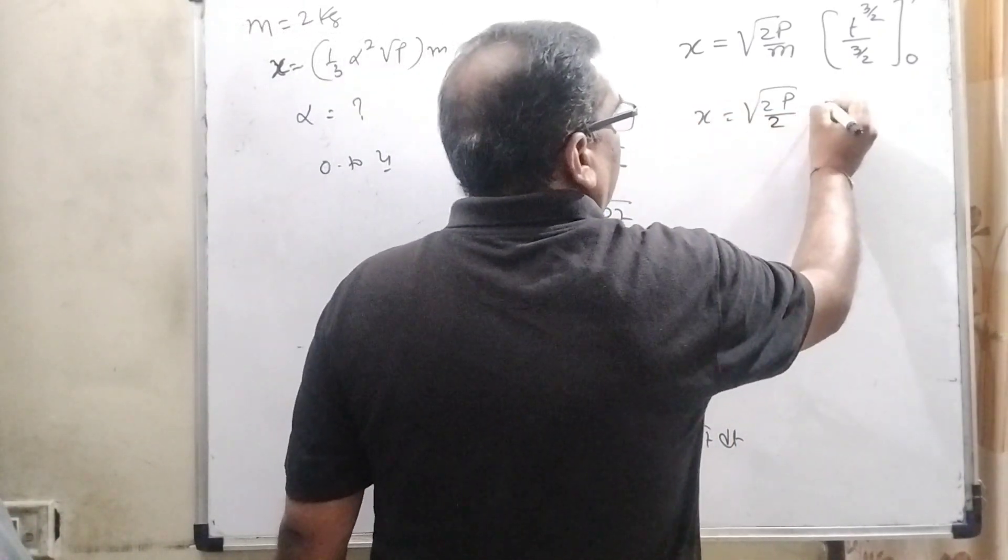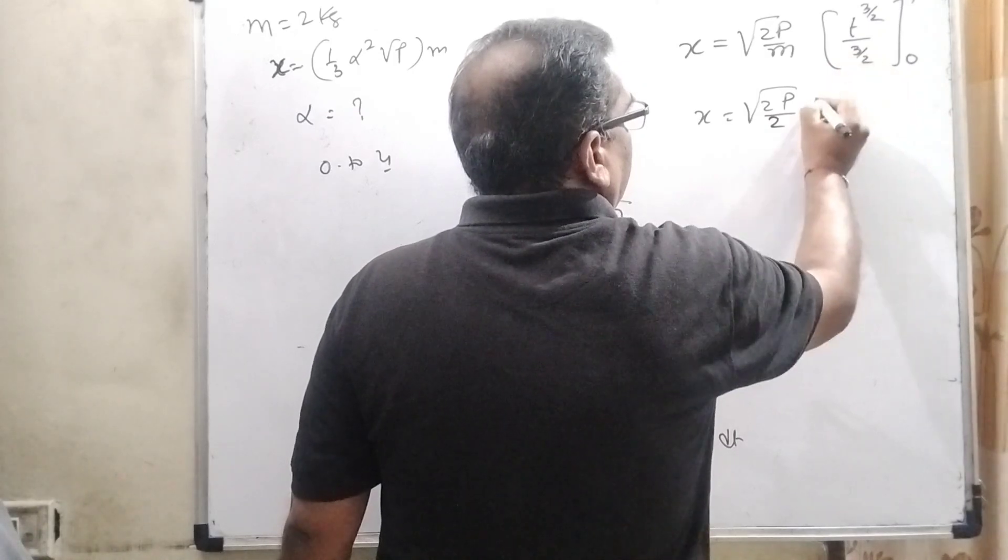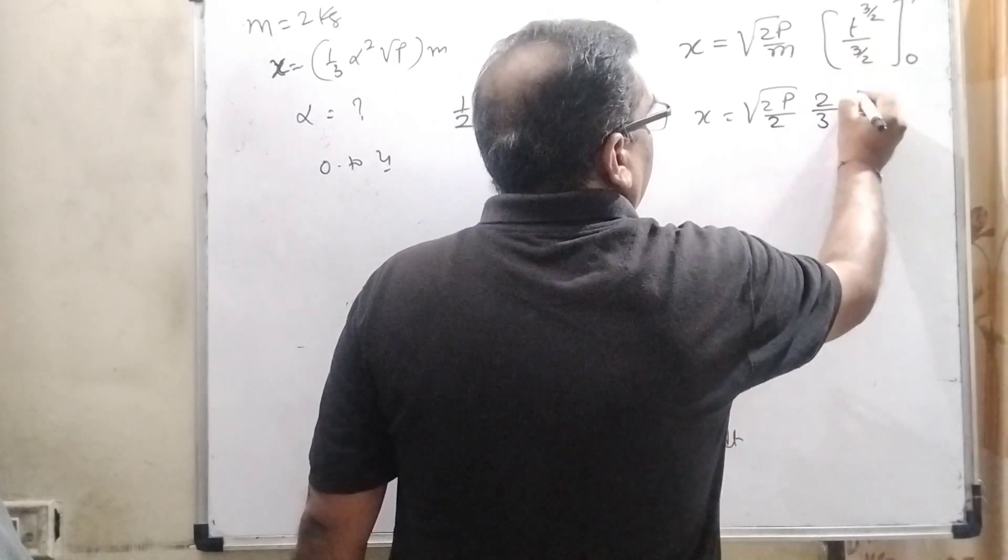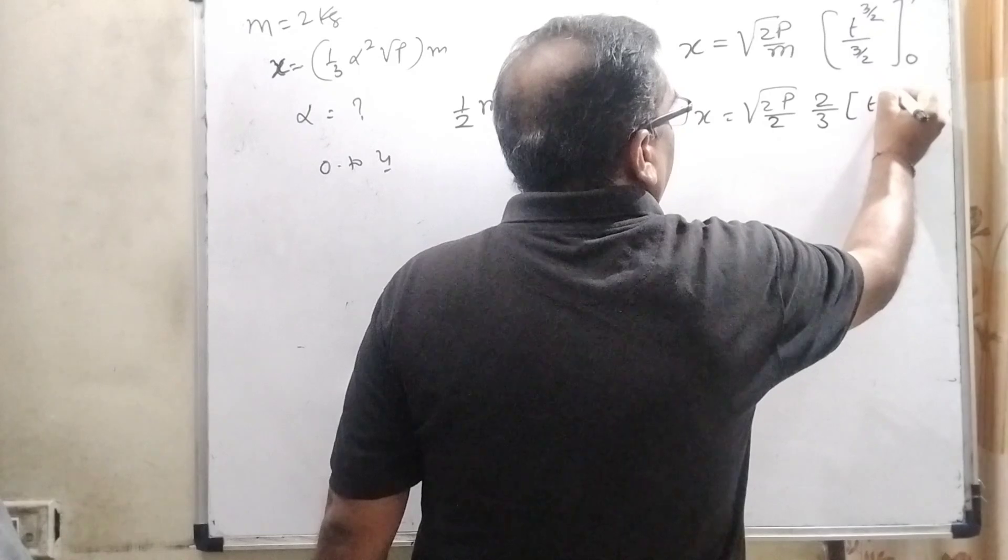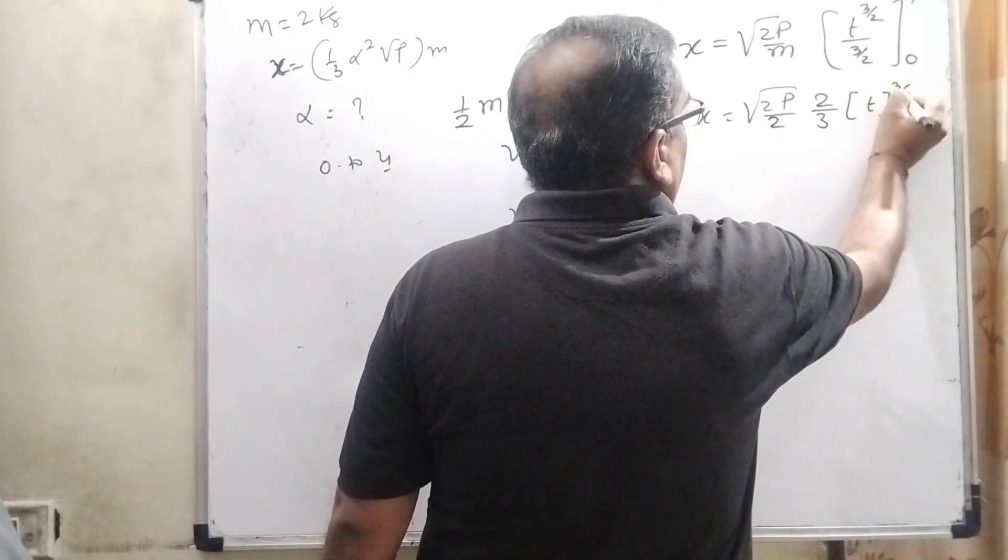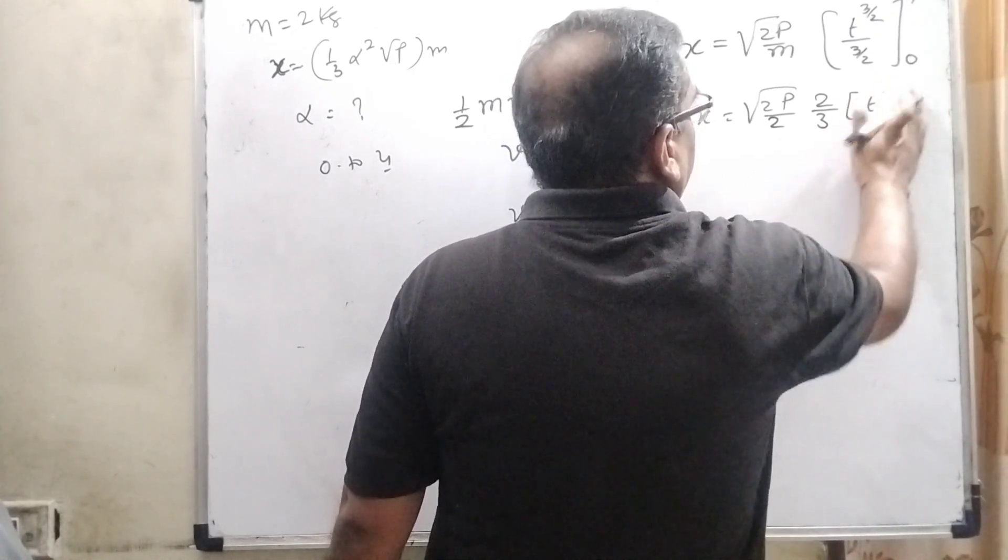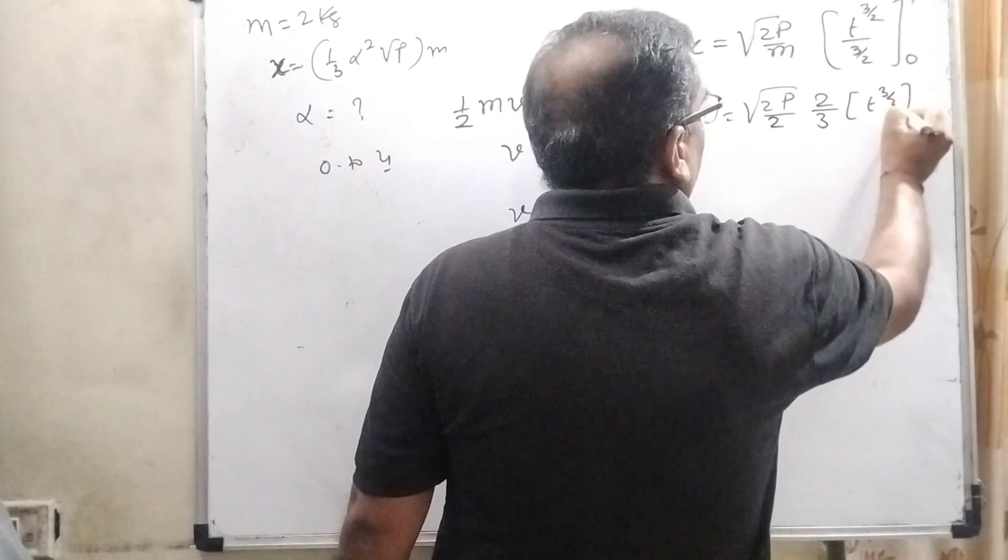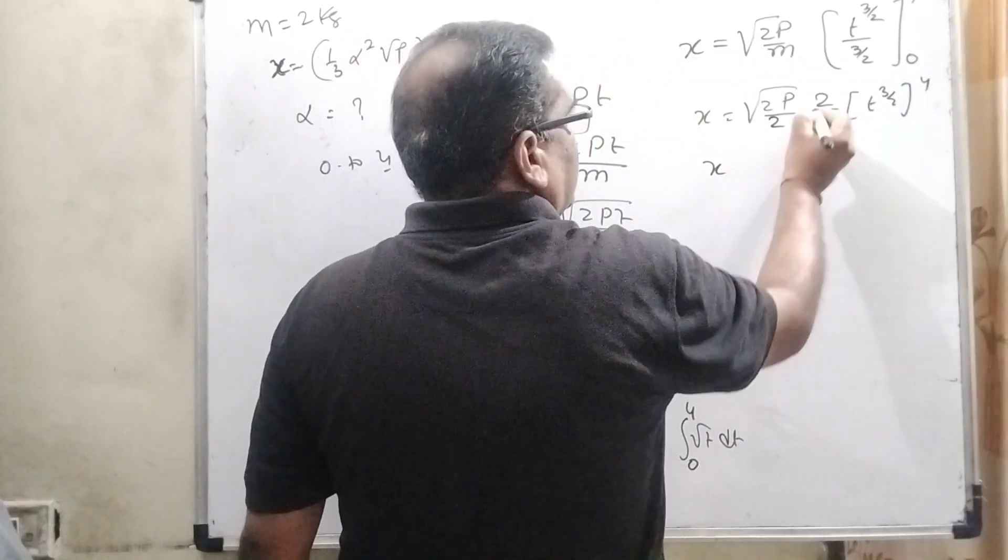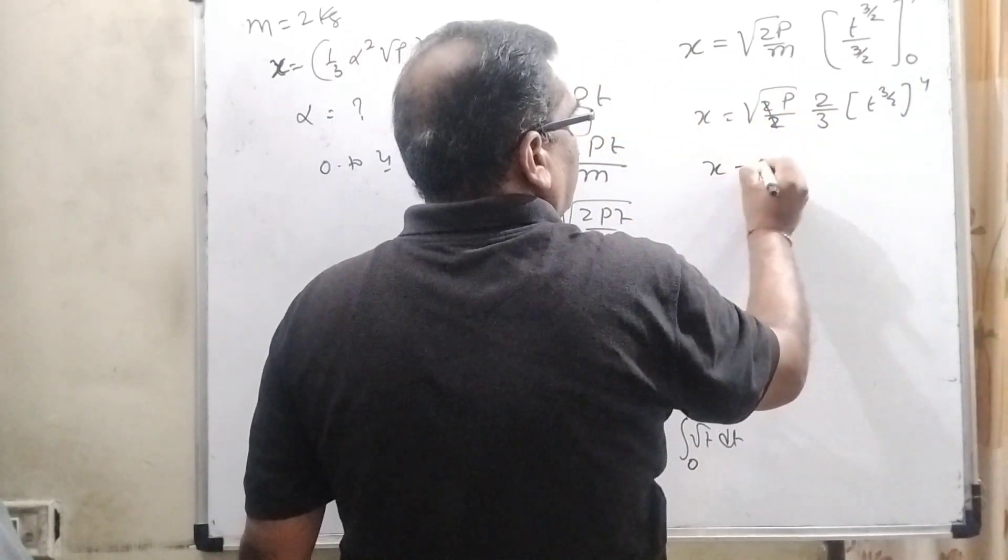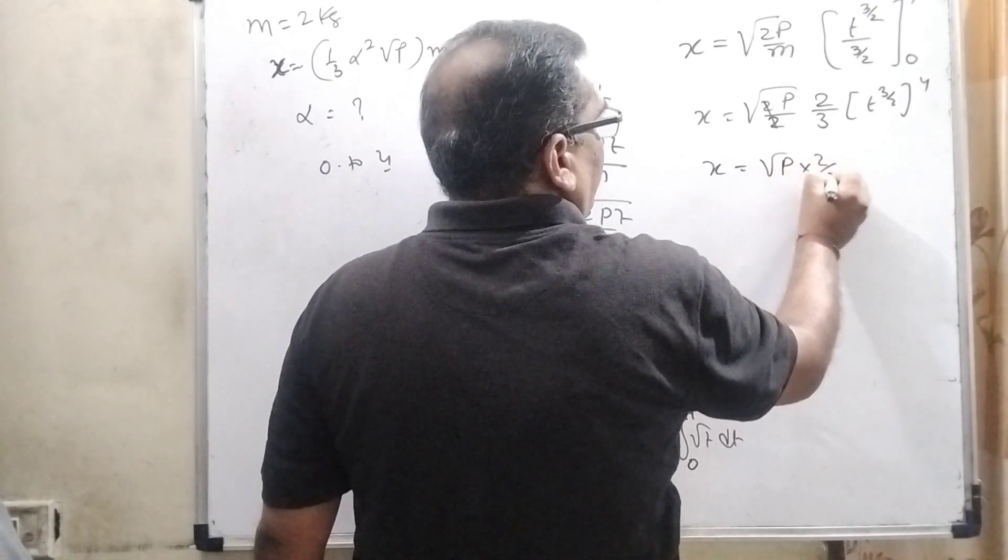Substitute this value: (3/2) becomes (2/3). Here, T raised to power 3/2, and substitute the limit raised to power 4. Here 2 cancels out, so x equals (2/3)√P.